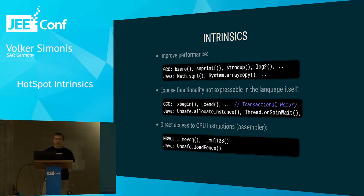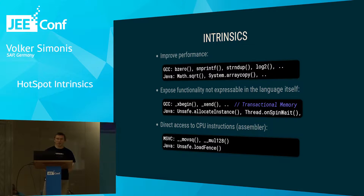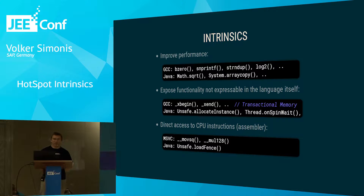The same holds true for Java. For example, unsafe.allocateInstance, which allocates a Java object without calling the constructor — that's actually not allowed by the language, but for some things it's needed, like deserialization. So there are functions in the unsafe API implemented as intrinsics because you cannot implement them in Java.